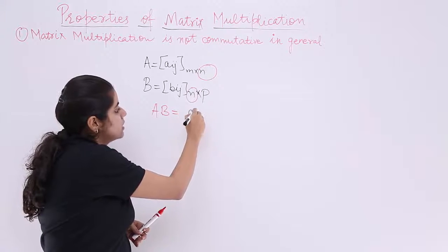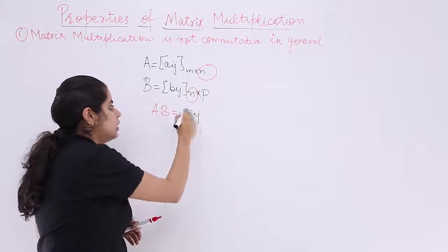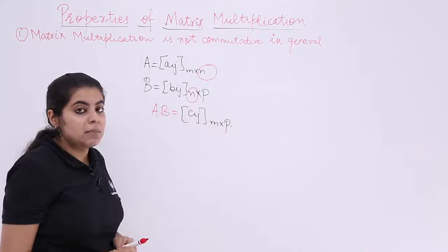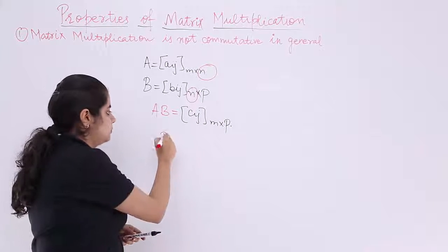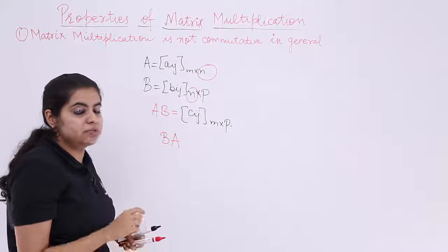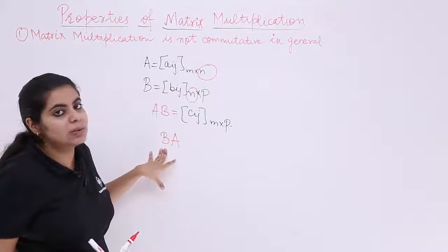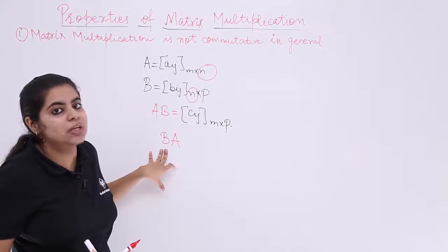And so it is an M by P matrix in general that we will be getting. So the answer will be what? It will be suppose say C_ij, a new matrix. It will be obtained and the order will be M by P. But what about BA? BA means first you need to multiply the matrix B with A. So in this case the post-multiplier and the pre-multiplier have changed.